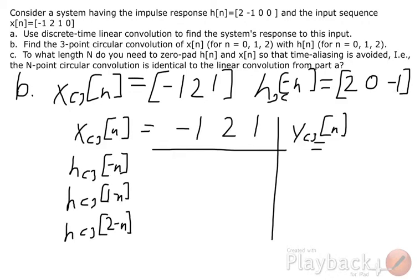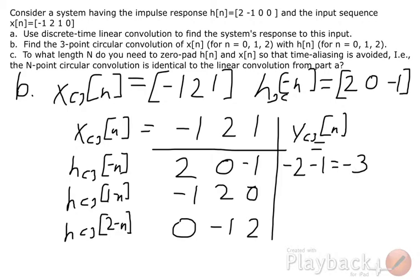We start with one of our signals and then we apply the other and rotate it. And multiply the h terms by the x and sum, making our three-point circular convolution equal to this result.